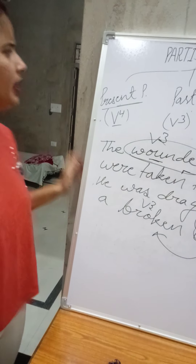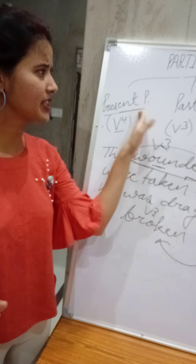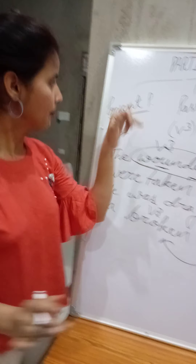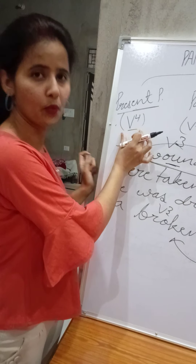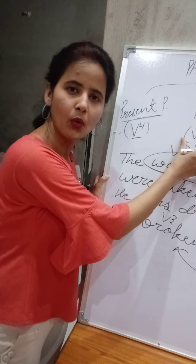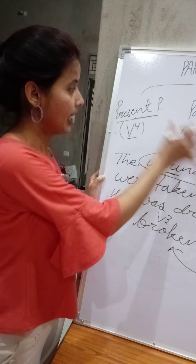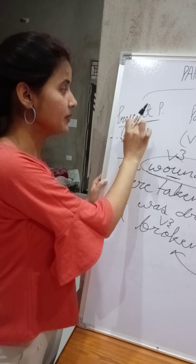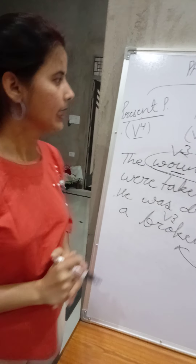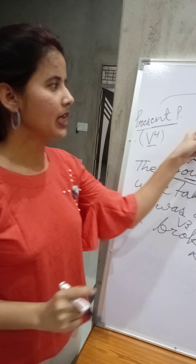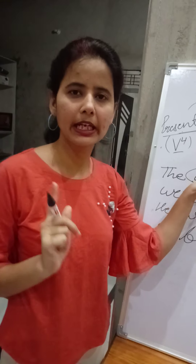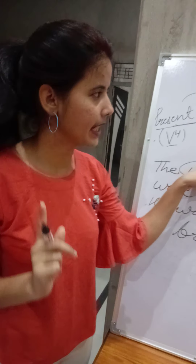Hopefully you have understood the difference between present participle and past participle. Present participle consists of V4 and shows incomplete action, whereas past participle consists of V3 and shows completed action.